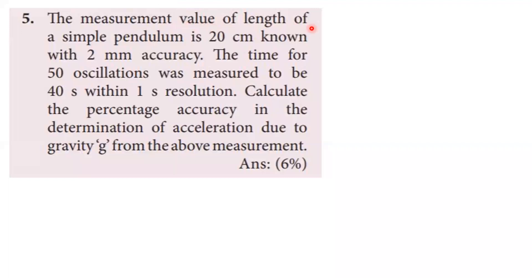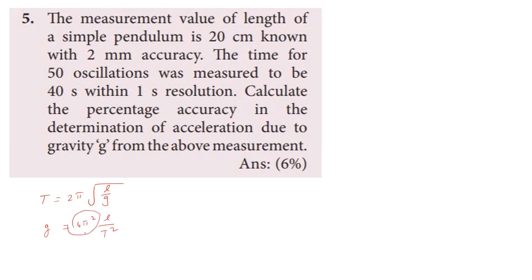Fifth problem: the length of a simple pendulum is 20 centimeters known with 2 millimeter accuracy. The time for 50 oscillations was measured to be 40 seconds within one second resolution. Calculate the percentage accuracy in the determination of g. Using T = 2π√(L/G), rearranging gives G = 4π²L/T². The percentage error in G is: (ΔG/G) × 100% = (ΔL/L × 100%) + 2(ΔT/T × 100%).